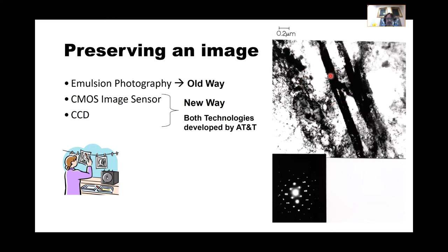I used to do a lot of work with hypervelocity impacts — I was looking at impact craters. This here is actually a transmission electron micrograph. These bars are deformation twins. This came from pretty much pure copper that was impacted with a tungsten carbide projectile traveling at hypervelocity speeds. You can tell it's old because it has a handmade micron marker.